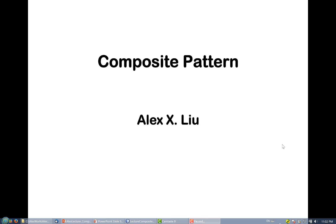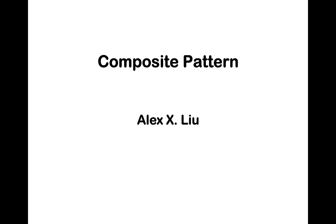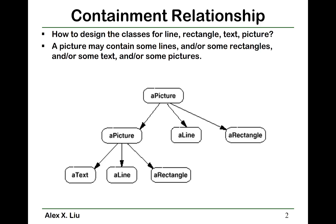This lecture is on composite pattern. Let's consider this system. Suppose you are asked to develop a graphic system. In this graphical system, you may have line, rectangle, text, or pictures. A picture may contain some lines, rectangles, text, or other pictures. For example, a picture contains another picture, a line, and a rectangle.